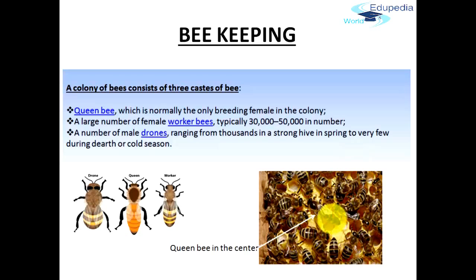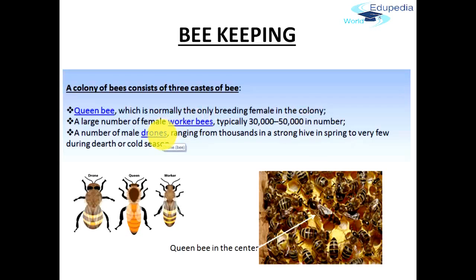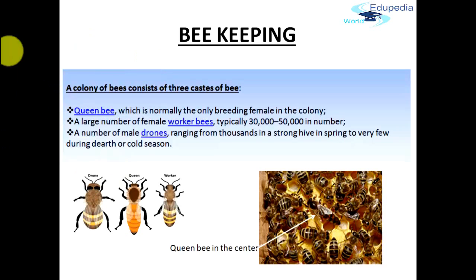The second type of caste is the worker bee. Worker bees are generally female, typically 30,000 to 50,000 in number. The third category is the drones — these are males, ranging from about a thousand in a strong hive in spring to very few during the cold season. So these are the three castes found in any colony of a beehive: the drone or male, the worker bee or female, and the queen bee, which is the only breeding female in the entire colony.